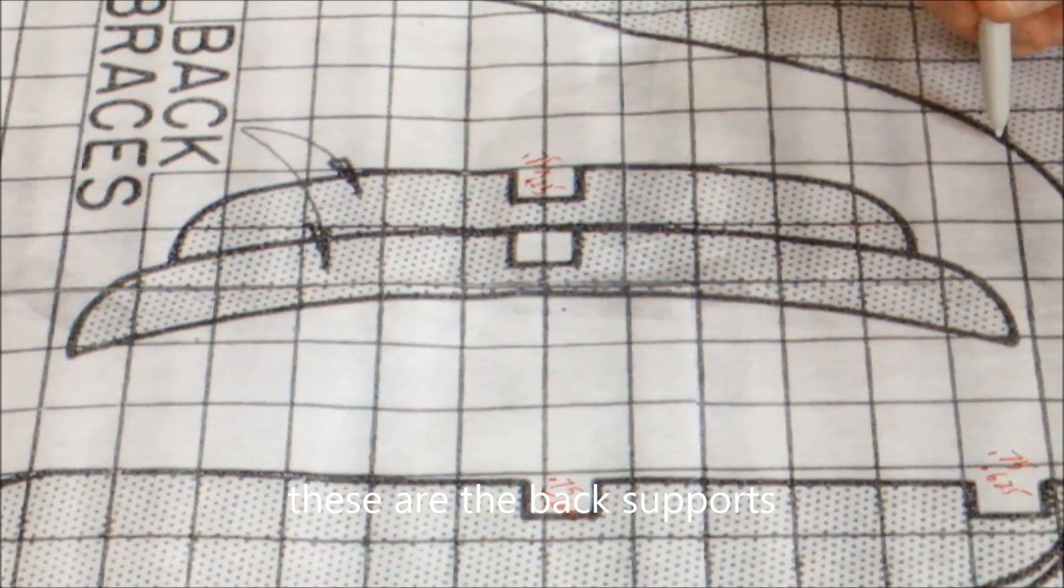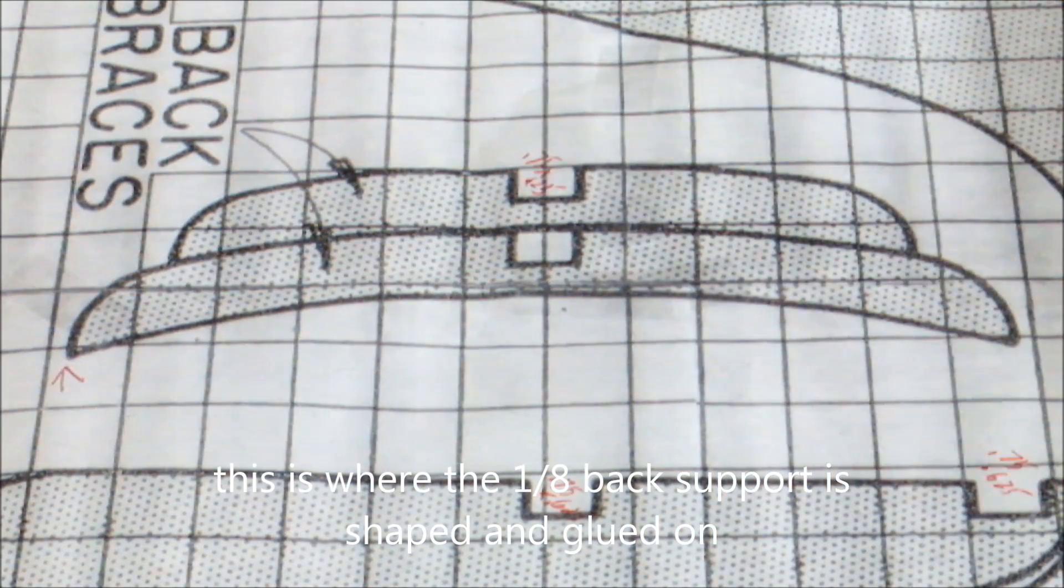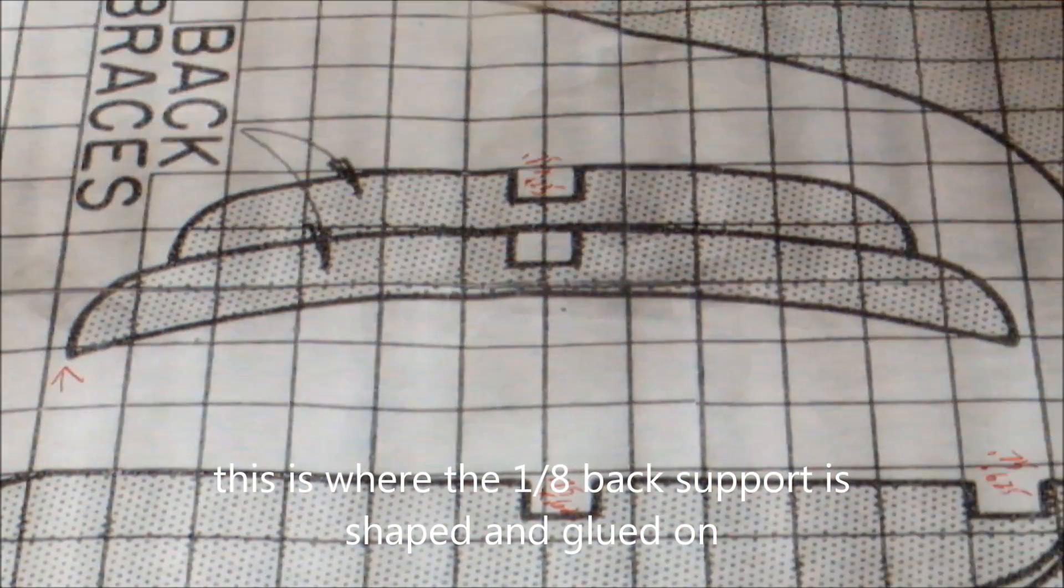Here on these back supports not only did I mark the red where I started, but I also marked those notched joints just to remind me to check them.